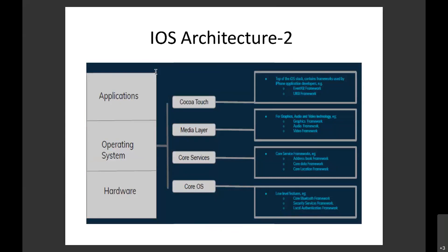Looking at the iOS architecture diagram, it is self-explanatory: we have hardware, above that is the operating system, and above that is the application. The CoreOS layer has basic features like Bluetooth, security services, and authentication. Above that is Core Services with address book, data locations, and GPS. Then comes the media layer and then Cocoa Touch.